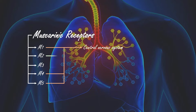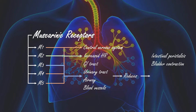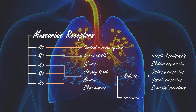M2 receptors lead to increased heart rates. M3 receptors are in the smooth muscles of the GI tract, urinary tract, airway, and blood vessels. Muscarinic receptor antagonist binding to M3 receptors reduces intestinal peristalsis and bladder contraction, reduces salivary and gastric secretions, reduces bronchial secretions, and increases bronchodilation.